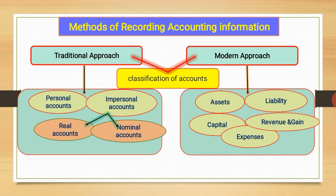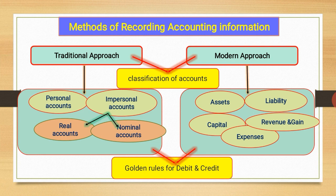The five categories under the modern approach are: assets, liabilities, capital, revenue and gains, and expenses. We also studied the golden rules for both approaches, covering when to give debit and credit to the accounts, and in this way we have studied the complete system of recording accounting information.